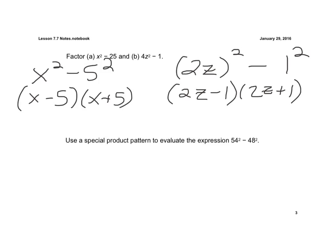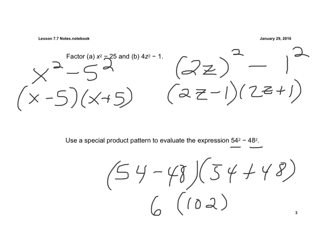Here they want you to use the pattern of a special product to find 54 squared minus 48 squared. Well, if we just take the concept that 54 squared minus 48 squared, we could rewrite it as 54 minus 48 times 54 plus 48. Well, 54 minus 48 is 6, and 54 plus 48 is 102.